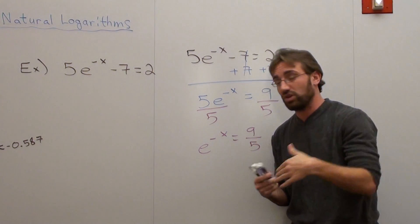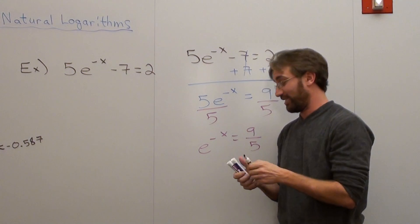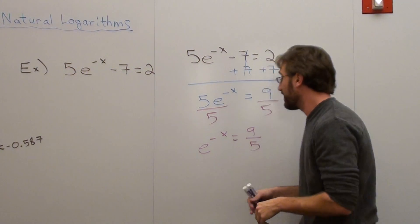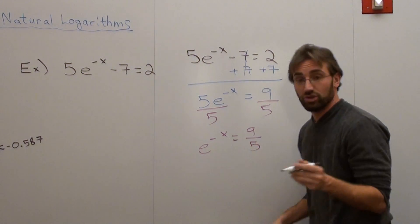And then I take the natural log on both sides. Excuse me, somebody was there just acknowledging them. So when I do that, I'm going to take the natural log of both sides.